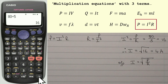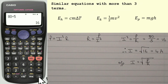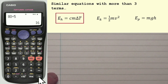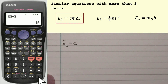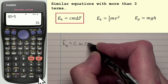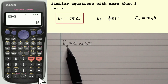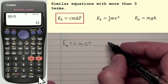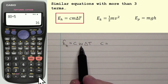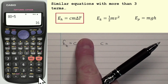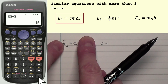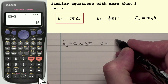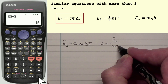Let's look at some other equations — these are similar except with three terms on the right-hand side. EH is heat energy, equal to C, specific heat capacity, multiplied by m, mass, multiplied by delta T, change in temperature. If working at heat energy, no rearranging needed. But if I had to work at C: C is being multiplied by m and delta T, so divide this side by m delta T. That gives C equals EH over m delta T.